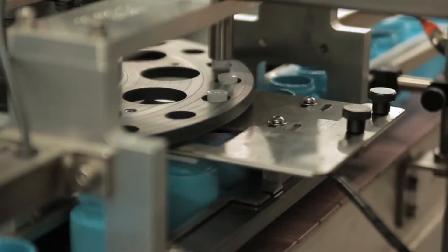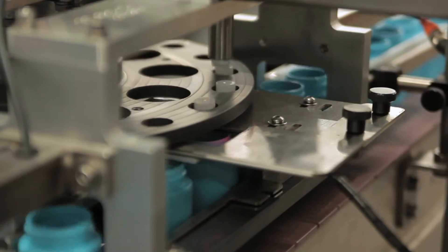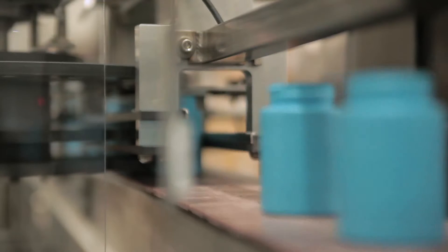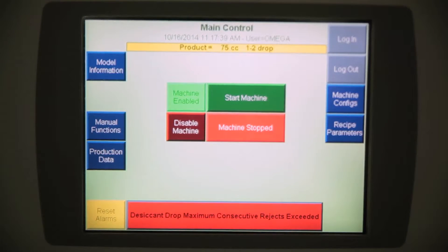An opening is provided in the shelf which allows the canister to drop into the bottle. Verification sensors detect the bottle presence and canister drop. If either condition is not sent simultaneously, then the machine is programmed to stop and display an error message.